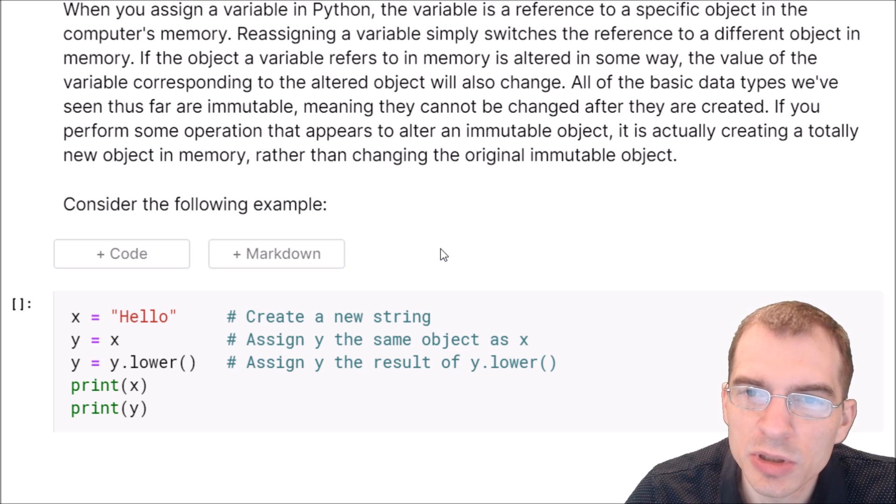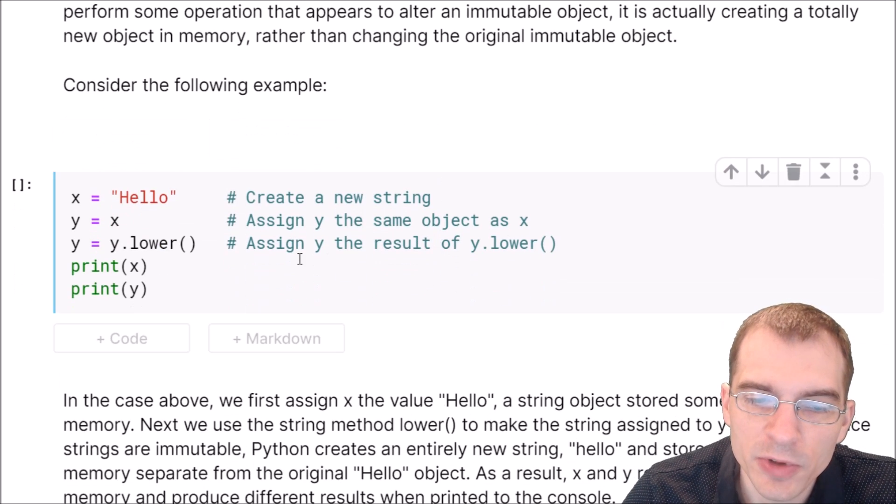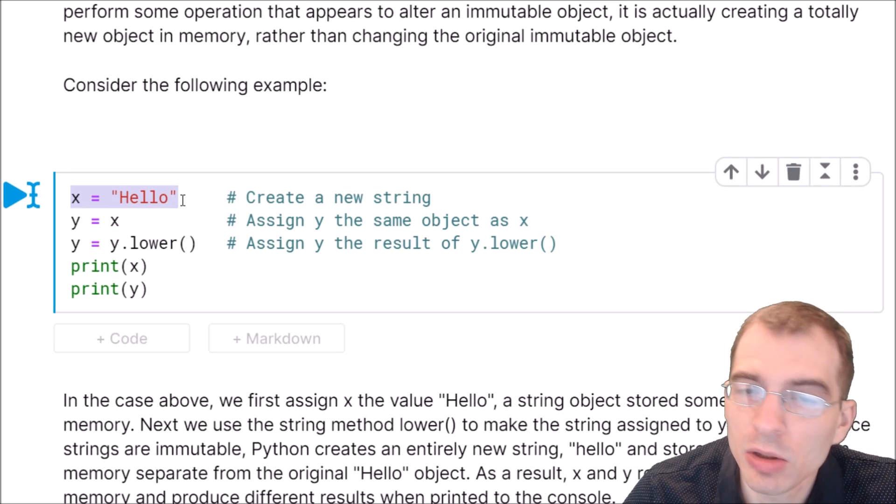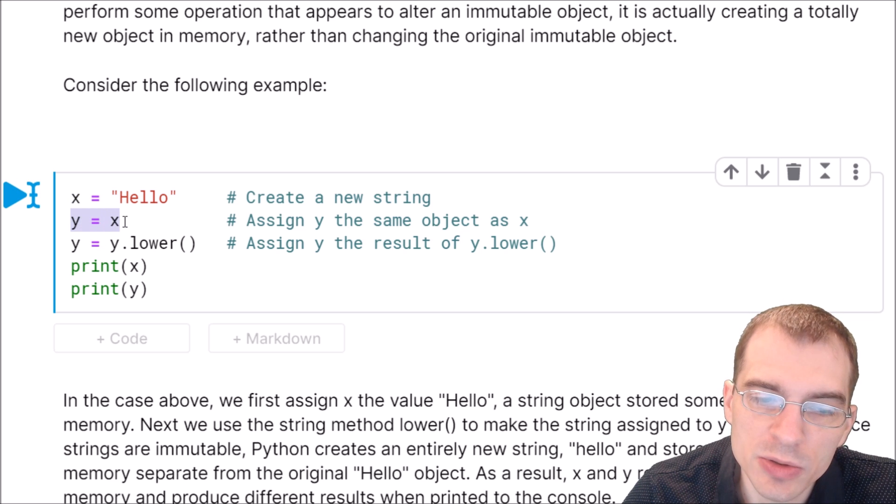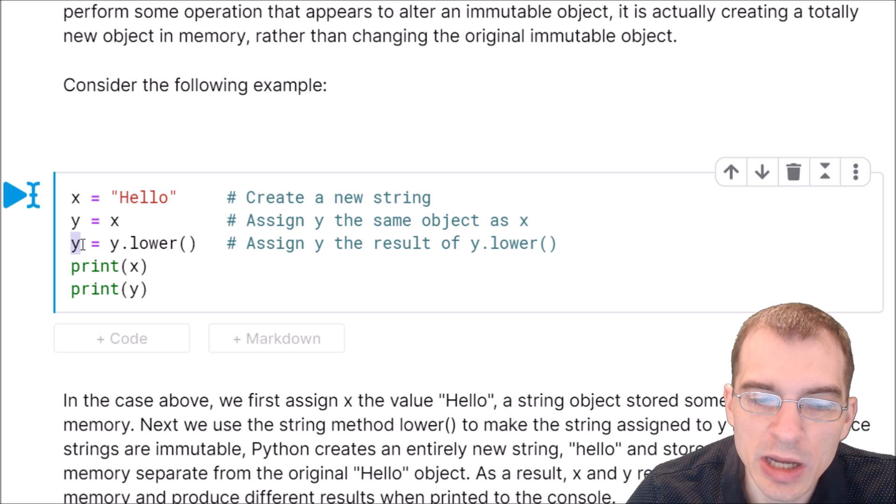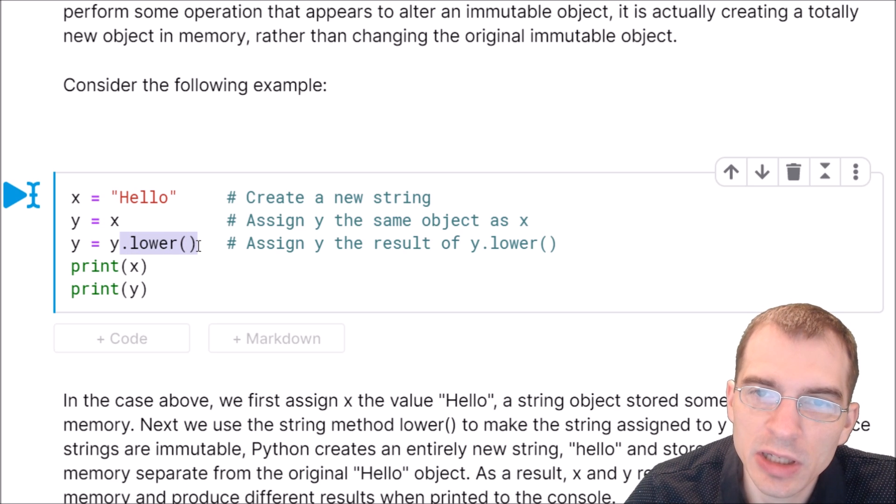Let's give an example of changing an immutable object here. First we're going to assign x the value of the string hello. Then we're going to assign y equals x. That means y is now also equal to this hello. But finally we're going to say y equals y dot lower. This dot lower function takes a string and makes the whole thing lowercase. So it's basically just taking this first capital H and turning it lowercase. But after running this y dot lower and we get the new hello with a lowercase h, this is actually assigning y a new object. Because strings are immutable, it has to assign a new object instead of actually altering this original one with the capital letter.